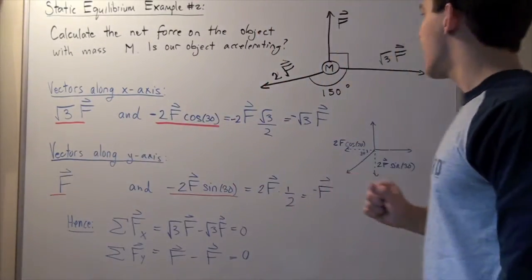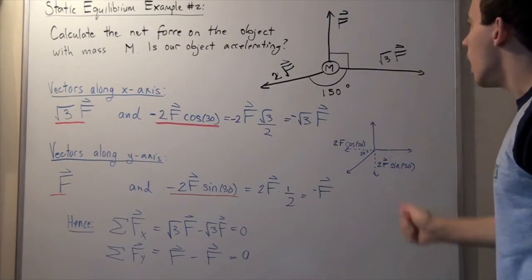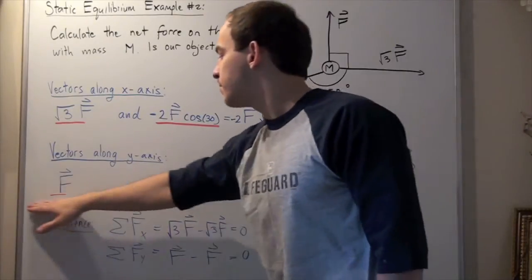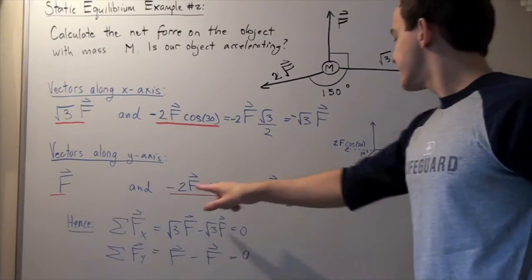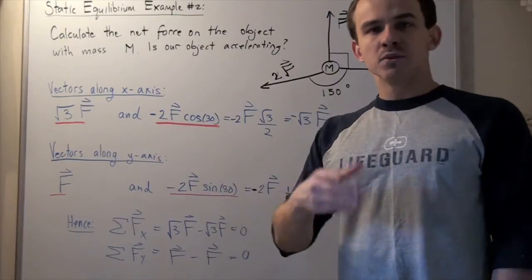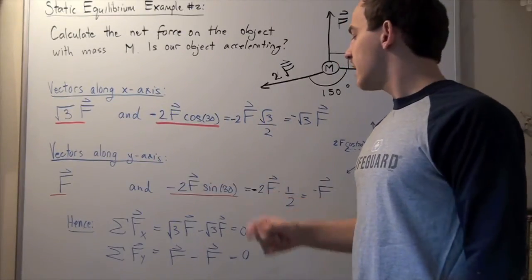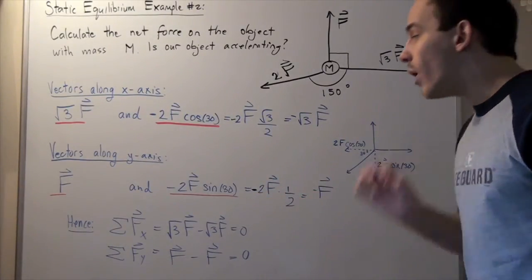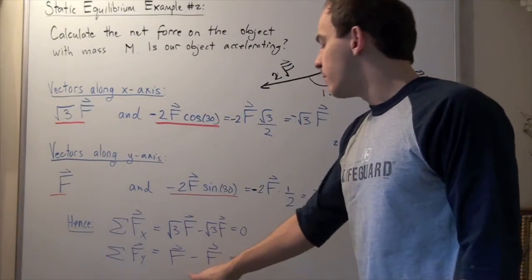Now let's sum the vectors along the y-axis. The upward direction is positive, so we have +F for the first force. The y-component of the 2F force points downward, giving −2F·sin30. Since sin30 = 1/2, this equals −2F·(1/2) = −F. Summing all y-direction forces: F + (−F) = 0. Our object is not accelerating along the y-axis either.